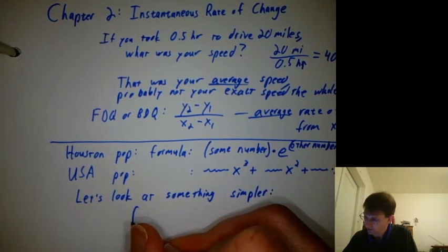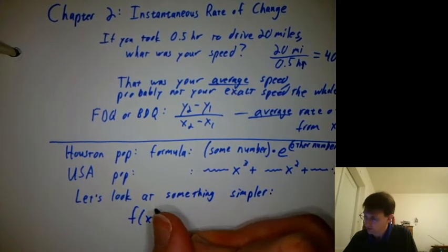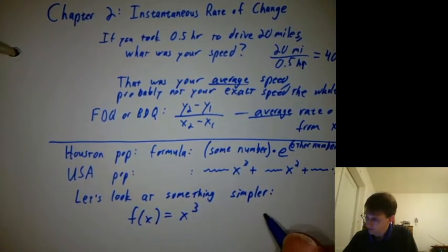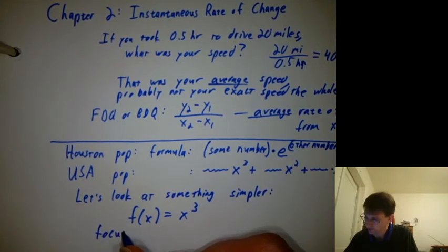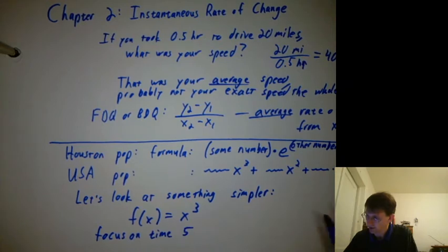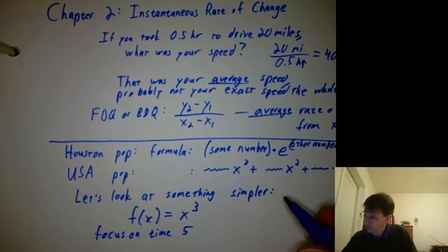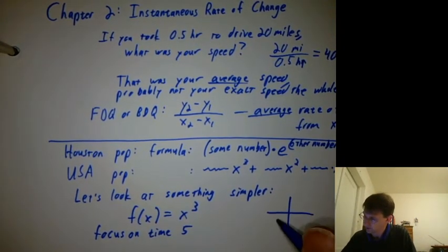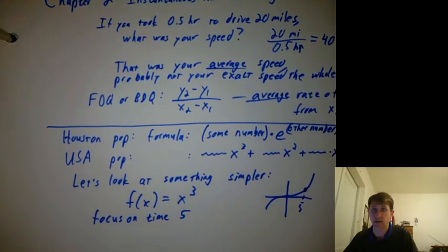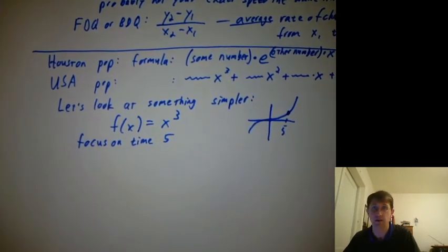How about f of x equals x cubed. Let's ask what's going on at time five. We'll quickly draw x cubed and we want to know how fast is the function changing at time five — what is the rate of change at time five.